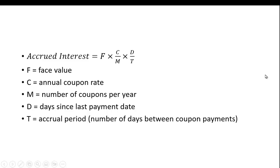So how do you figure out the accrued interest? It's really quite simple. You take the face value of the issue and multiply it by the annual coupon rate divided by the number of coupons per year. So really that's the rate you're getting per period or per coupon. You then have to adjust it for the time period, the fraction of a period between the two coupons. So that would be the days since the last payment date divided by the accrual period, the number of days between coupon payments.